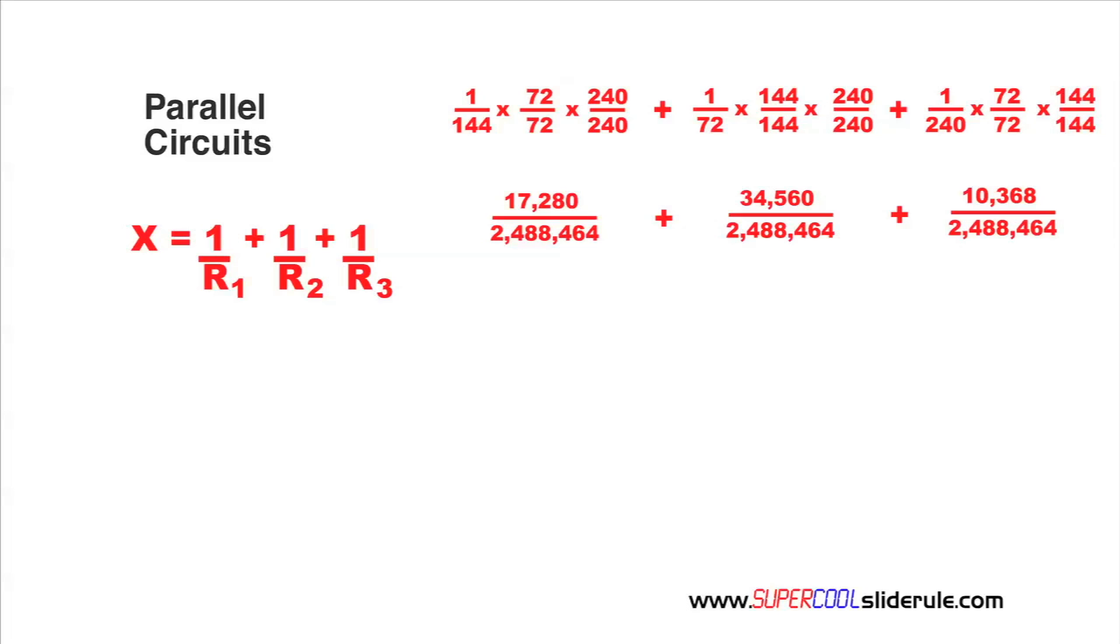Now, when we're adding fractions, we do not change the bottom. The bottom stays the same. The top will give us 62,208 over 2,488,464.